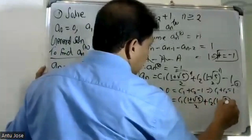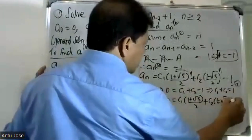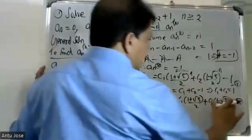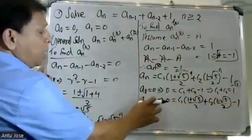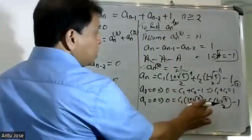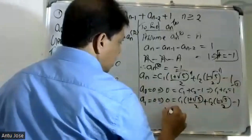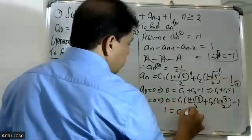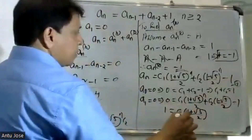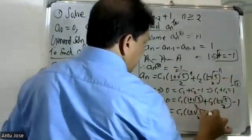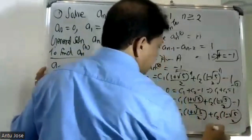Dividing by 2 and forming the equation. For the particular solution, substituting gives: the particular solution a(n)^p satisfies a(n) minus a(n-1) minus a(n-2) equals 1. This is equation 3: a(1) equals 2 times C1 into (1 plus root 5 by 2) plus C2 into (1 minus root 5 by 2).